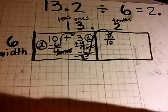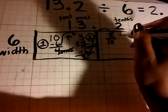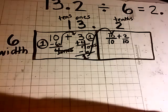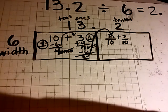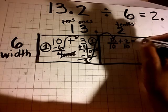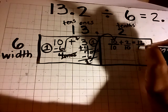So we are going to add the 10 tenths to the 2 tenths that we already have. 10 tenths plus 2 tenths equals 12 tenths.